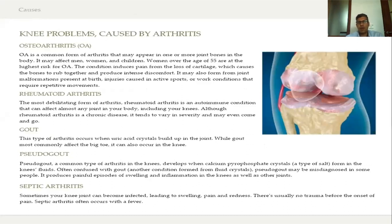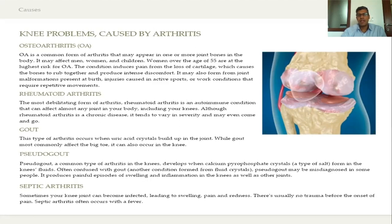Osteoarthritis is most commonly age-related, but young people can also have arthritis due to conditions like rheumatoid arthritis or gout. In osteoarthritis, the knee cartilage — which is normally painless — wears away, exposing bone to nerves and causing significant pain. The pain can be present even at rest and can lead to difficulty in activities such as getting up, sleeping, especially when one knee rubs against the other, and moving to the restroom.